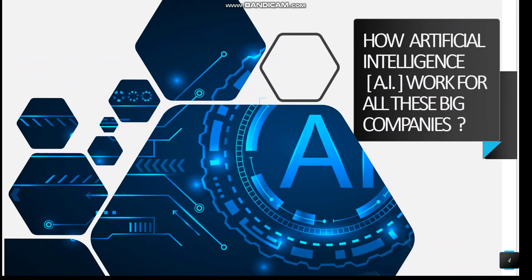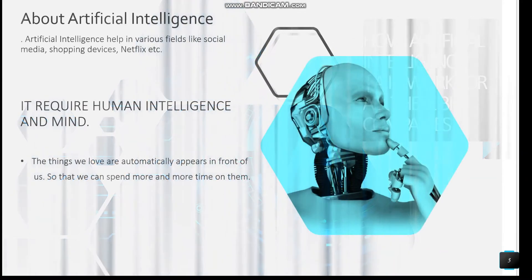Another question is how does artificial intelligence work for all these big companies? Artificial intelligence helps in various fields like social media, shopping devices, Netflix, etc. The things we love automatically appear in front of us so that we can spend more and more time on them. This is all done because of artificial intelligence.